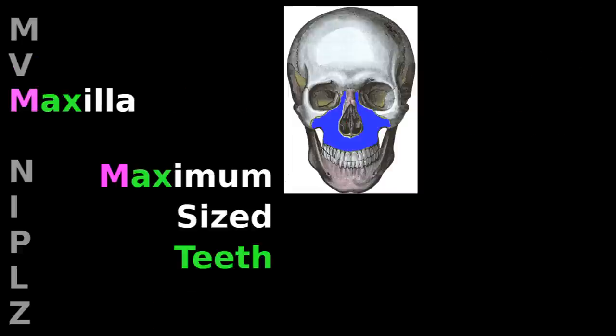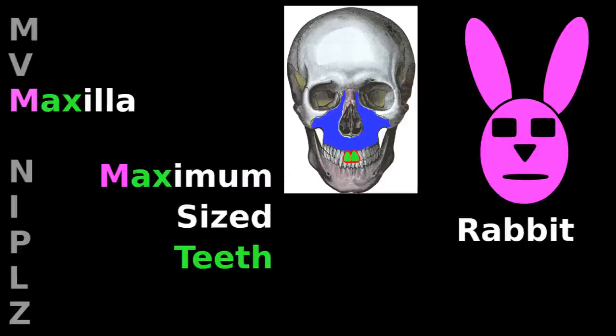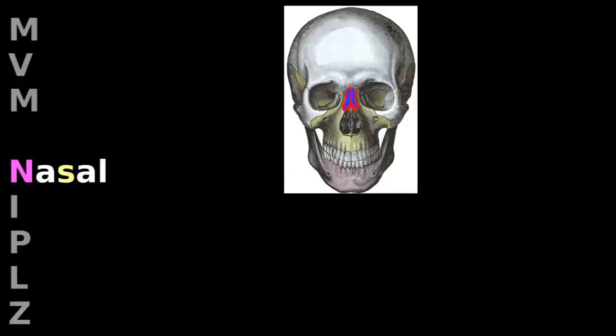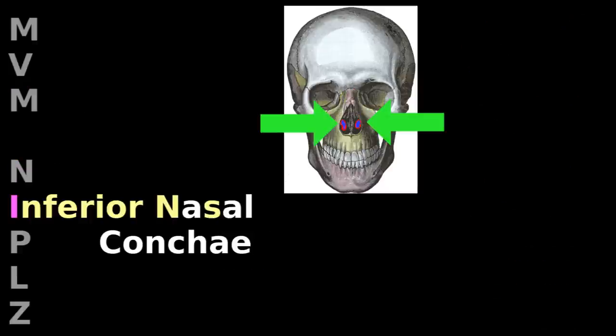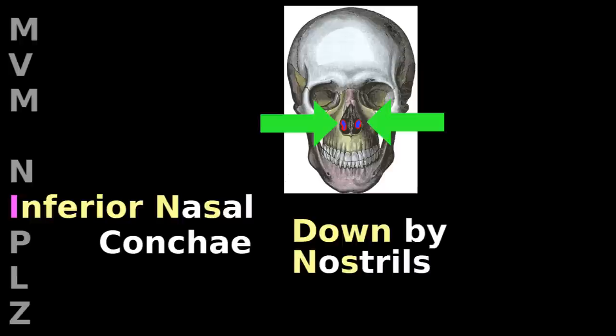The maxilla is near your maximum size teeth, like rabbit buck teeth. The nasal bones make up the bridge of your nose. Inferior nasal conchi are down by the nostrils.